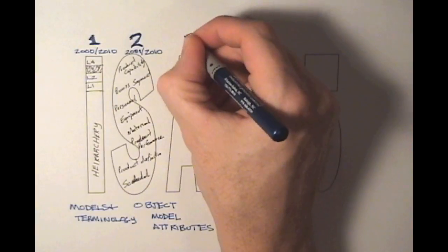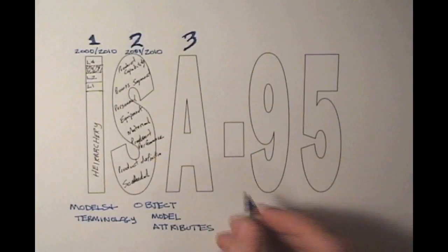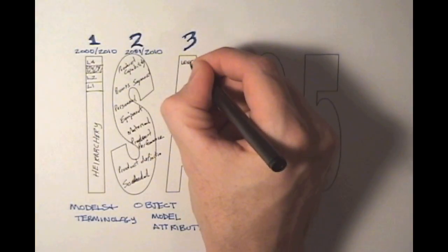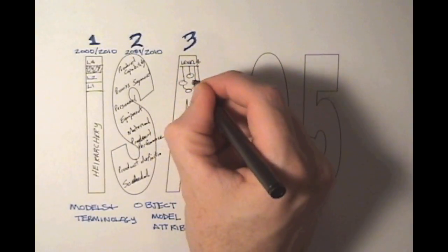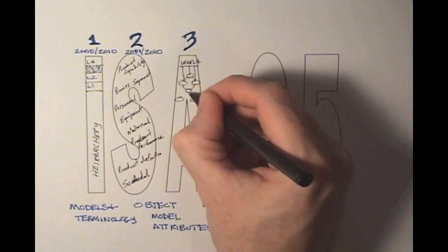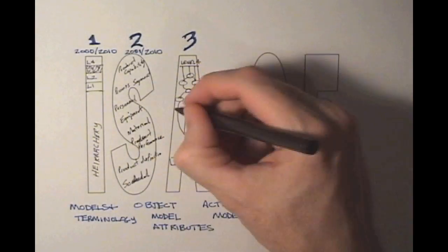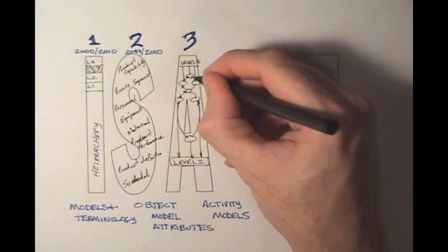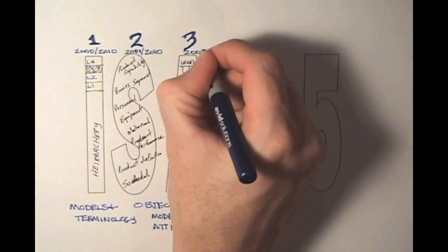Part 3 further defines the activities that are carried out in the MES and MOM space. Also in this part, a generic model or activity model is highlighted. This can be used for several different activities carried out in Level 3, such as Production, Maintenance, Quality, and Inventory. With this generic model, it becomes clear how information can flow back and forth between Level 4 and 2. This part was introduced in 2005.